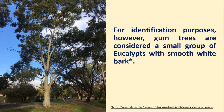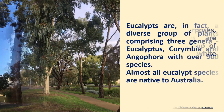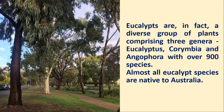For identification purposes, however, gum trees are considered a small group of eucalypts with smooth white bark. Eucalypts are, in fact, a diverse group of plants comprising three genera: Eucalyptus, Carimbia, and Angophera, with over 900 species. Almost all eucalypt species are native to Australia.